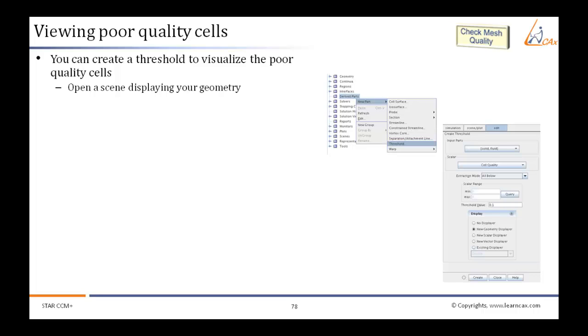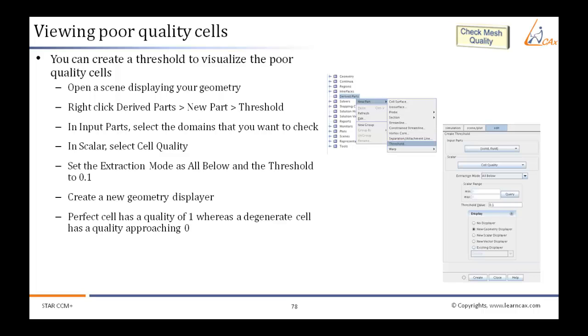For introducing threshold, open a scene displaying your geometry. Right click Derived Parts, then New Part, and then Threshold. In Input Parts, select the domains that you want to check.